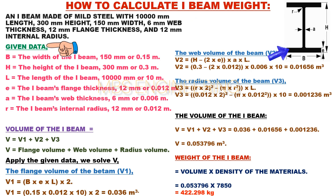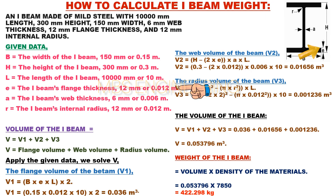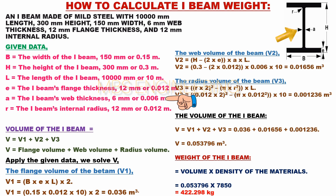Based on the above scenario, the given data is: B (width) = 150 mm or 0.15 m; H (height) = 300 mm or 0.3 m; L (length) = 10,000 mm or 10 m; A (flange thickness) = 12 mm or 0.012 m; A (web thickness) = 6 mm or 0.006 m; R (internal radius) = 12 mm or 0.012 m.